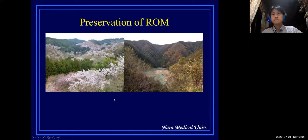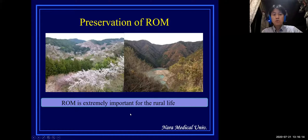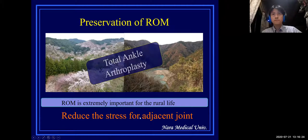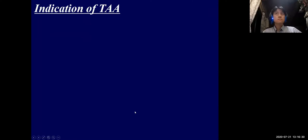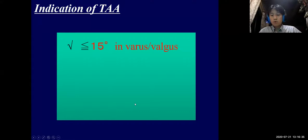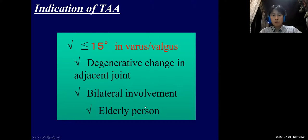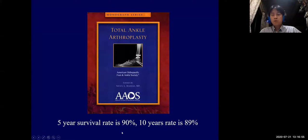The next topic is arthroplasty. Preserving range of motion is extremely important for rural life. Total ankle arthroplasty is an ideal option for this condition, as it also reduces stress on adjacent joints. Our conventional indication for TAA is under 15 degrees of valgus deformity, degenerative change in adjacent joints, bilateral involvement, and elderly patients. According to the AAOS textbook, five-year survival rate is 90% and ten-year survival rate is 89%.